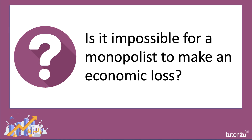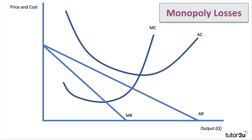One of my students asked a really interesting question: is it virtually impossible for a monopolist to make an economic loss? You tend to associate monopoly with supernormal profits, but the answer is it's not impossible to make a loss — it depends on your costs and your revenues. It could be the case, as shown here, that demand has fallen and costs are relatively high, such that average revenue is below average cost.